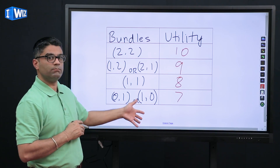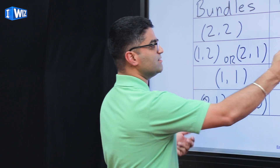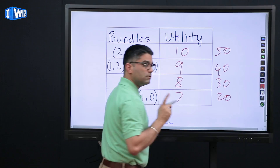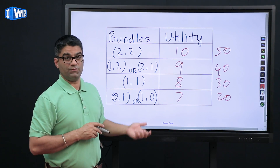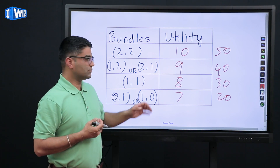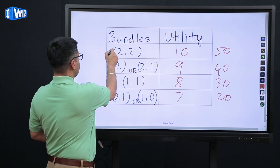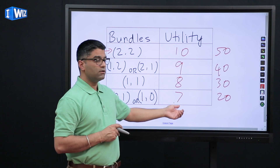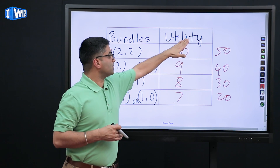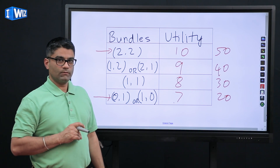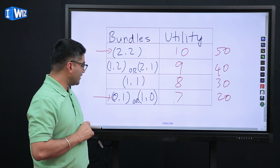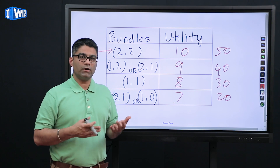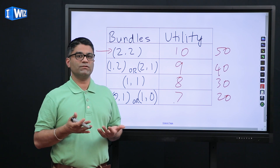It doesn't matter what the specific numbers are. I could have very easily picked these numbers to be 50, 40, 30, and 20. The important part is the quantitative ranking of these utility numbers. So this bundle will give you a level of happiness of 10, and this bundle will give you a level of happiness of 7 — or any number — but the ranking is what's important. Make sure you have a good understanding of what utility means in relation to each bundle and also across each indifference curve.